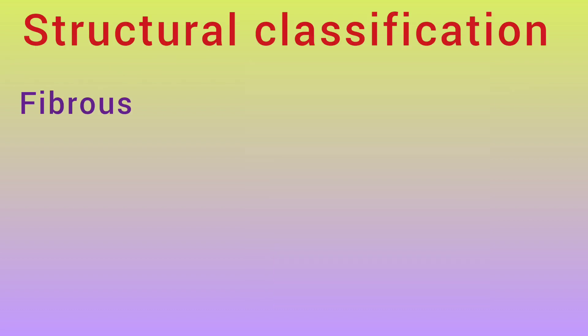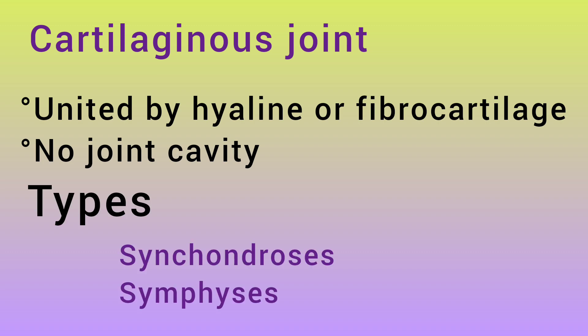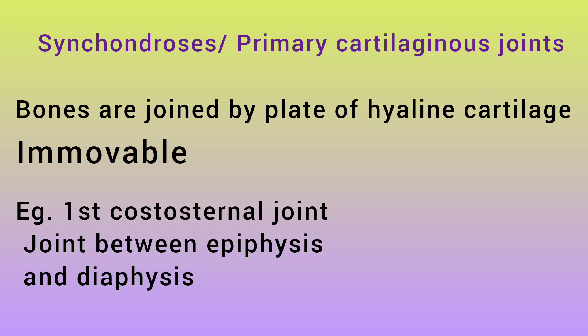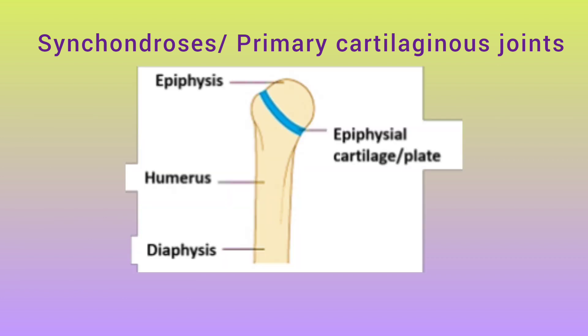In structural classification, after fibrous joints, we have the cartilaginous joint — united by hyaline or fibrocartilage, with no joint cavity. There are two types: synchondrosis and symphysis. Synchondrosis, also called primary cartilaginous joints, are bones joined by a plate of hyaline cartilage. As growth ceases, the hyaline cartilage is converted to bone. This joint is immovable. For example, the first costal-sternal joint and the joint between epiphysis and diaphysis.